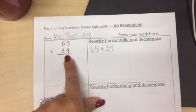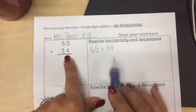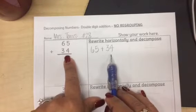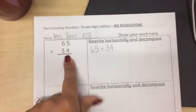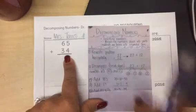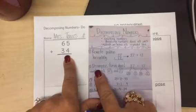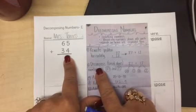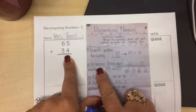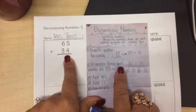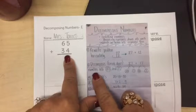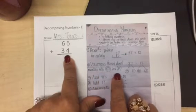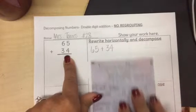Thumbs up if you already wrote 65 plus 34 horizontally. Perfect. Let's keep going. Please read step number two on your anchor chart. Decompose — break down numbers into tens and ones. Good job.